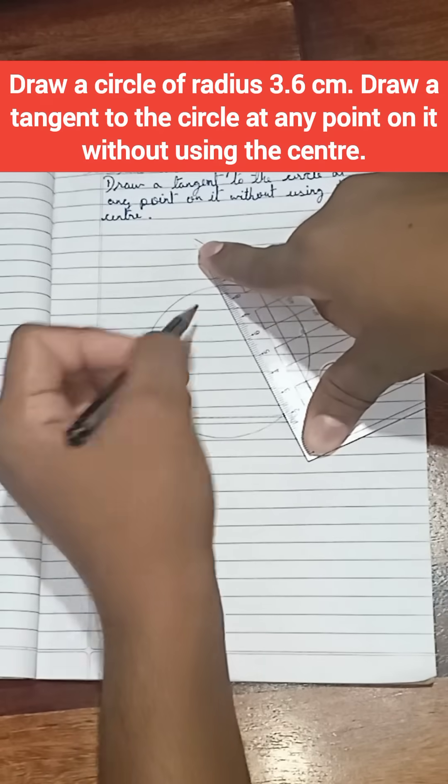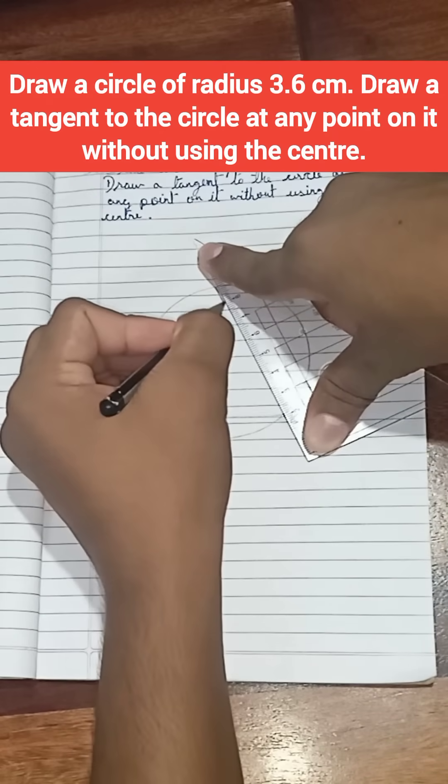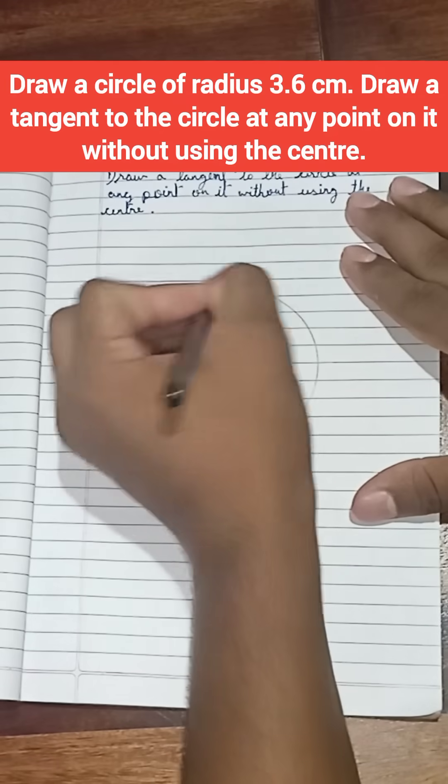Now draw a triangle using this line. Now name this point A.